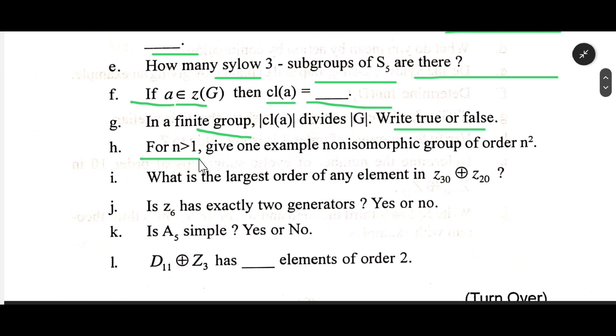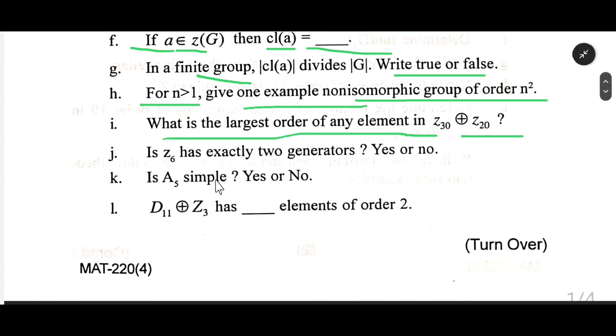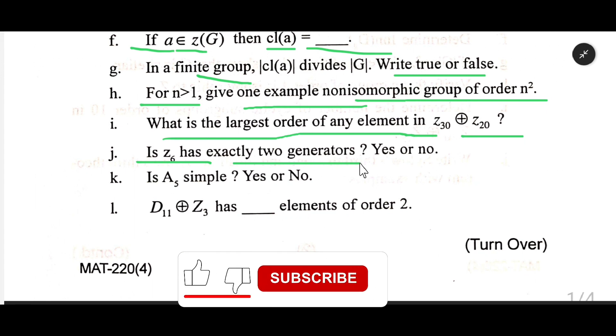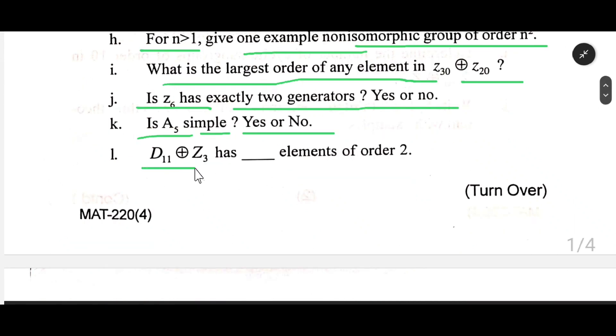For n>1, give one example non-isomorphic group of order n². What is the largest order of any element in Z₁₃ ⊕ Z₃₀? Z₆ has ___ generators. Yes or no: Is A₅ simple? Yes or no.